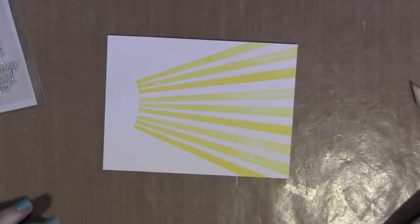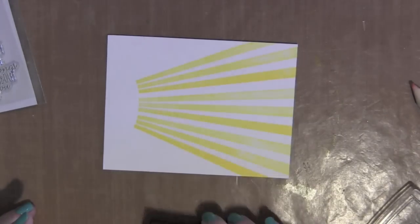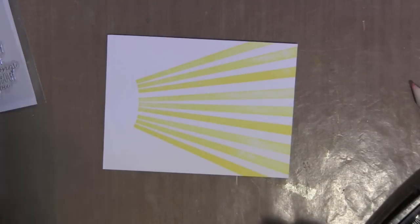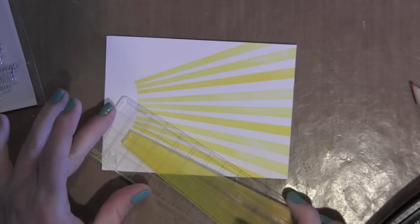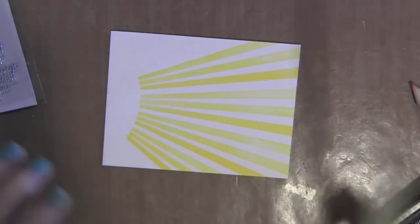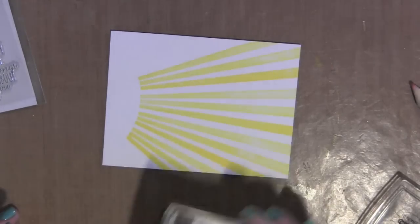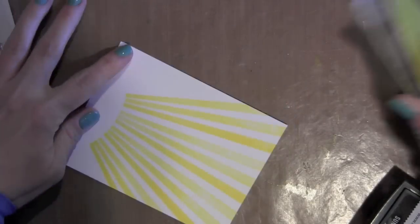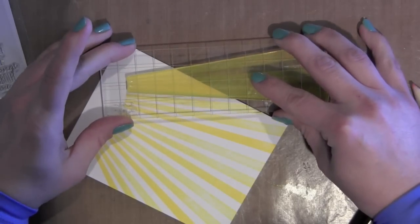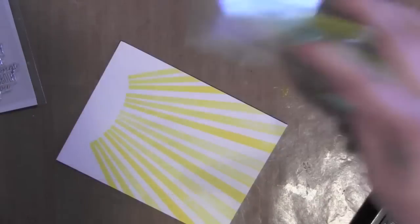I like to turn mine to the side, it helps me when I'm stamping to be able to line it up a little bit easier and you can see I bumped the stamp before I actually stamped it there but again I'm going to cover that up so all is well. And I did start from the center and work my way out from each side.